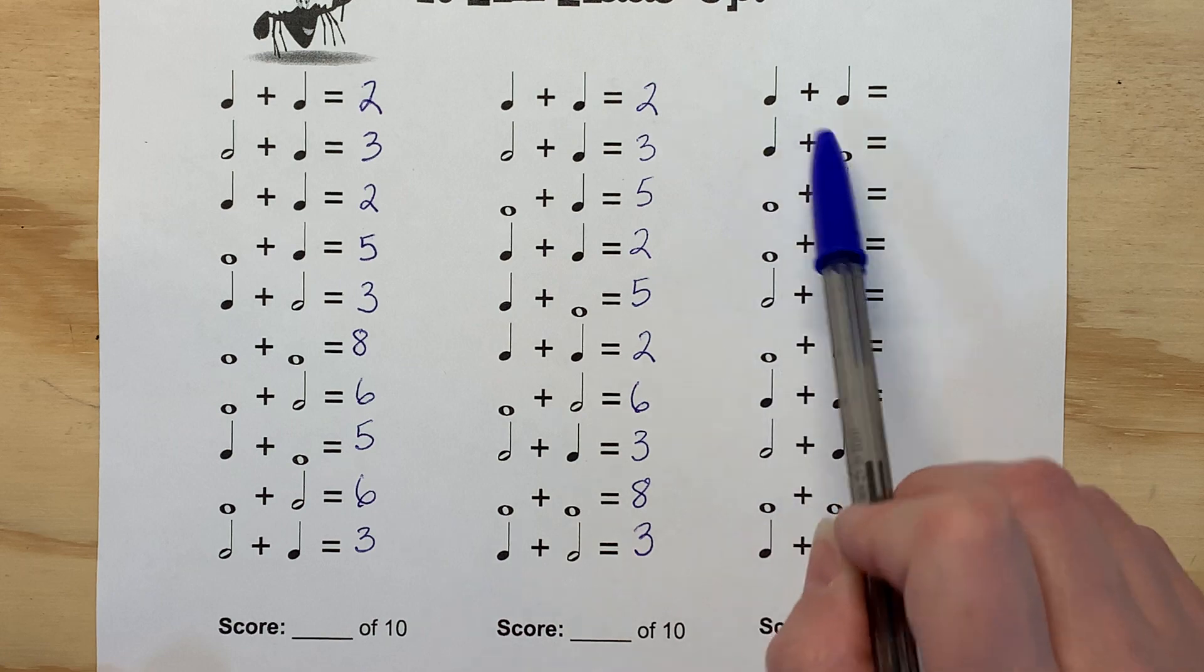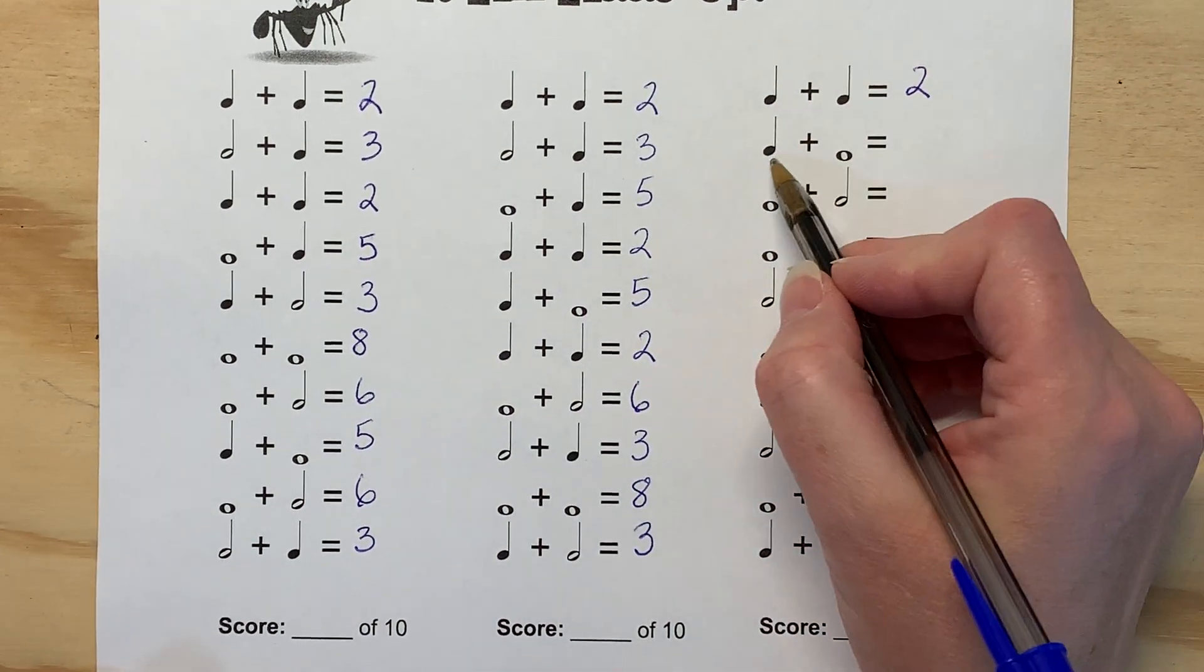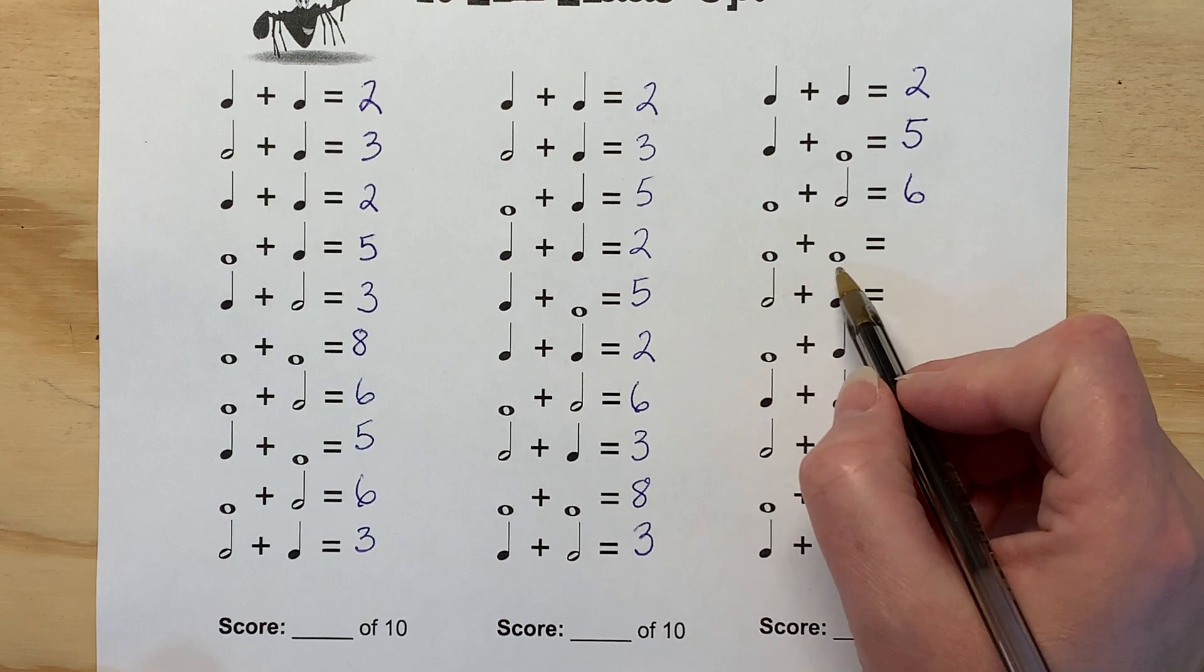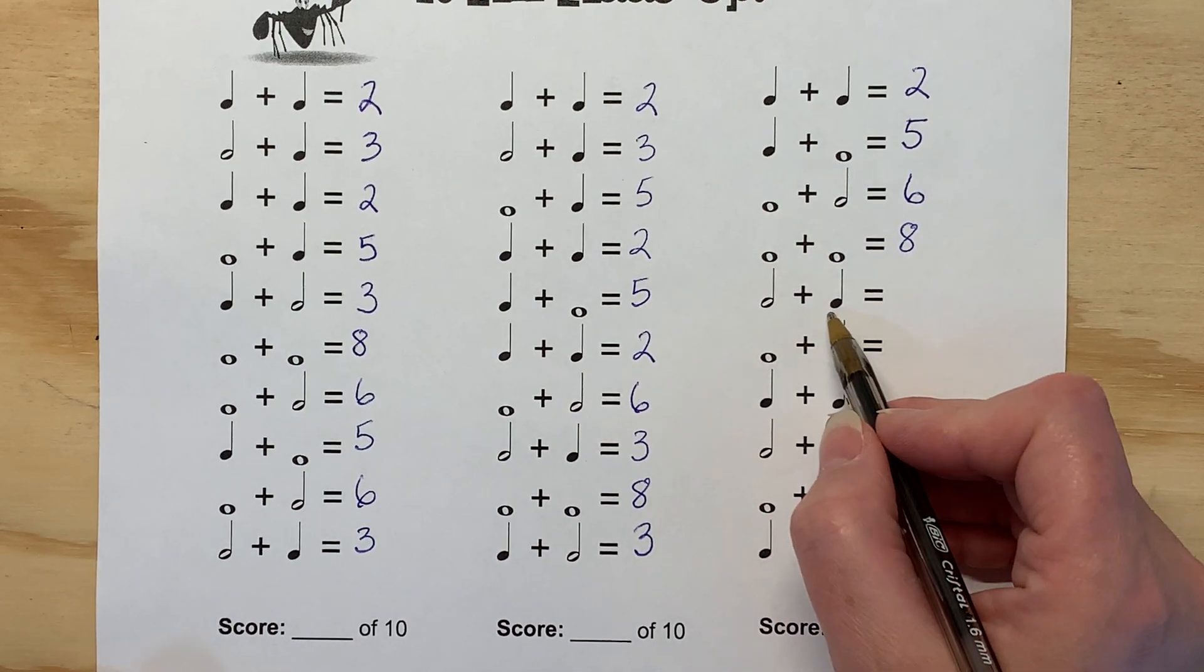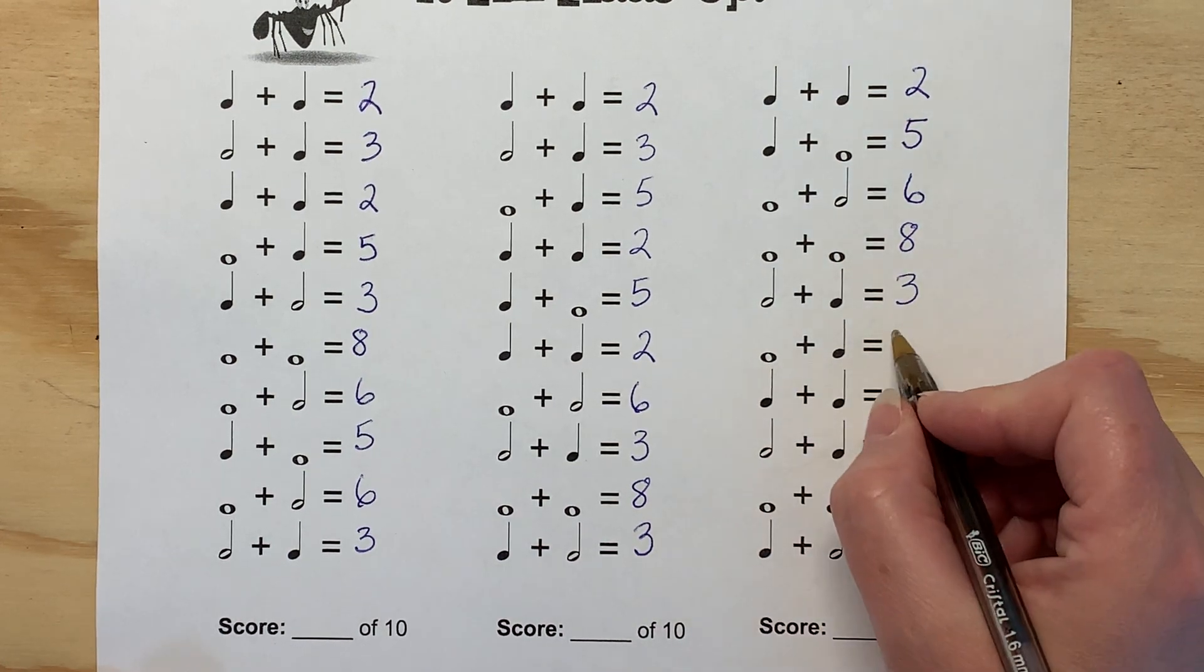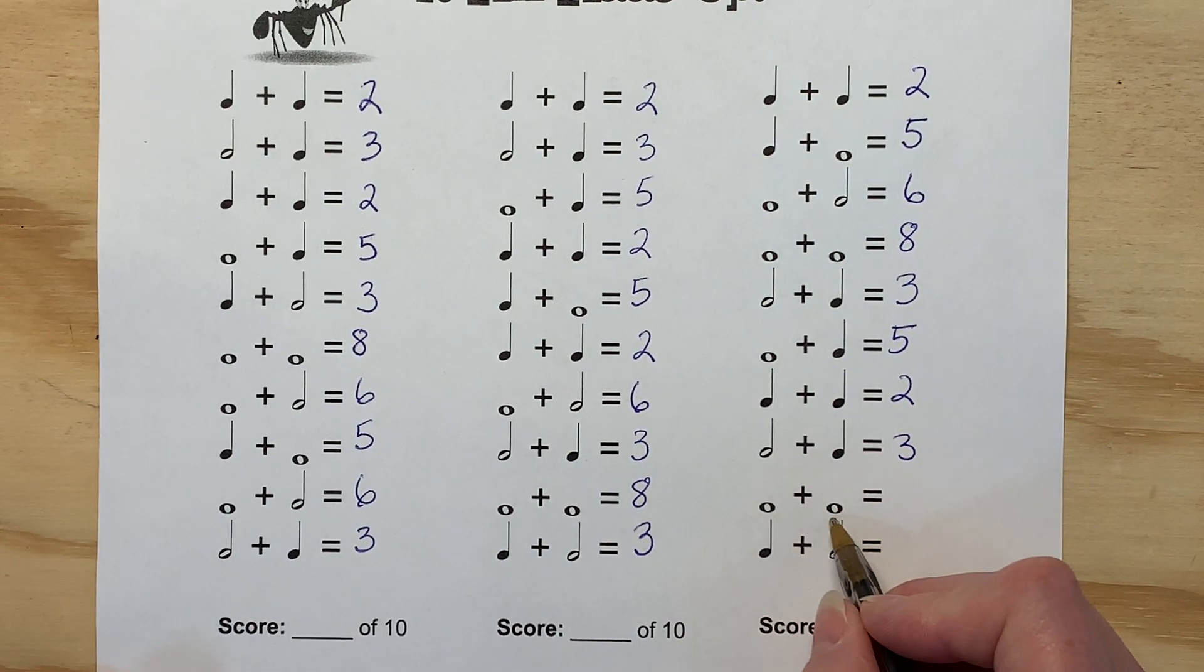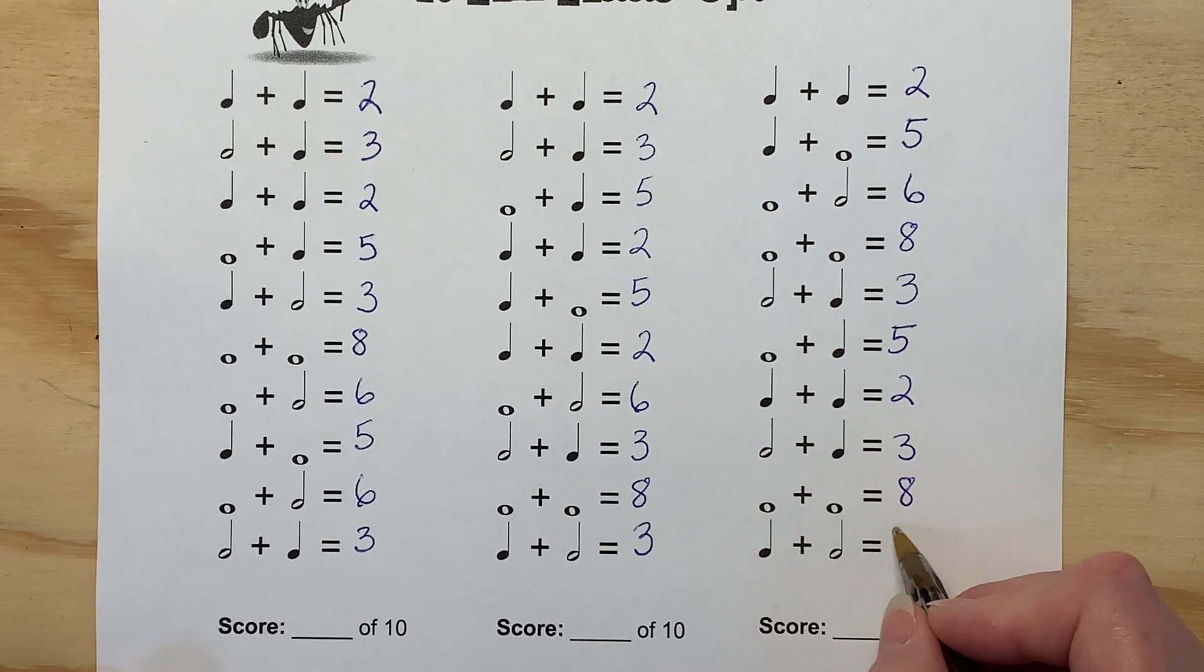And now you've come back and here we go. So we have one plus one, two. Remember these are beats. One beat plus four beat, five. Four beats plus two beats, six. Check my math. Four beats plus four beats, eight. Two beats plus one beat, three. Four beats plus one, five. One beat plus one beat, two. Two beats plus one beat, three. Four beats plus four beats, eight. One beat plus two beat, three.